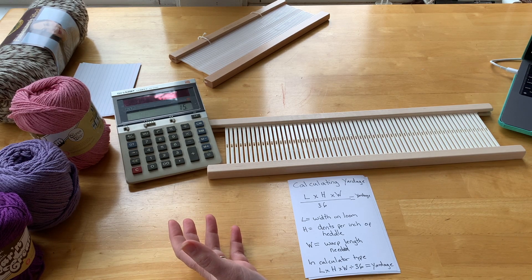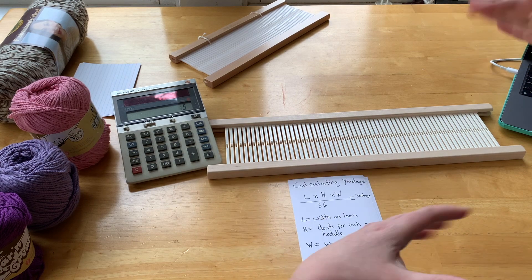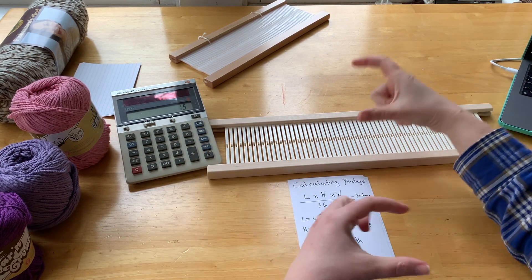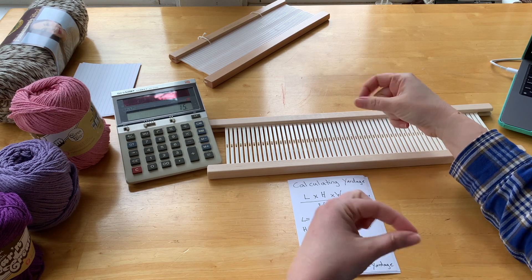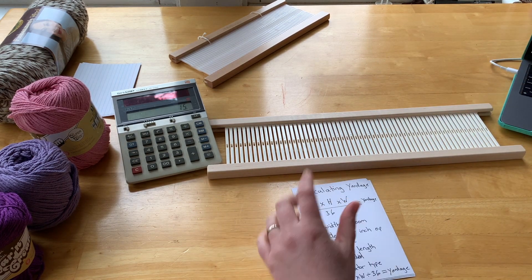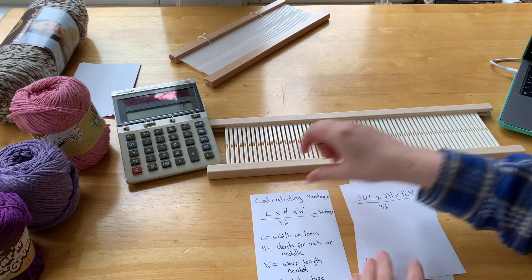So again, in that case for me, it would be 30, which is this number, plus 12 of the waste. And then since my fringe is only an inch and a half, I don't have to add that because I'll have plenty in those six inches on both sides of the waste to get fringe. So that gives me 42 for this number.